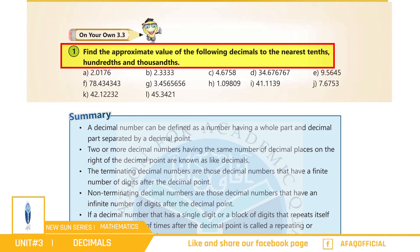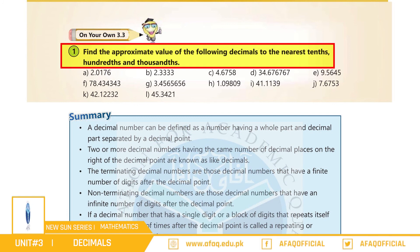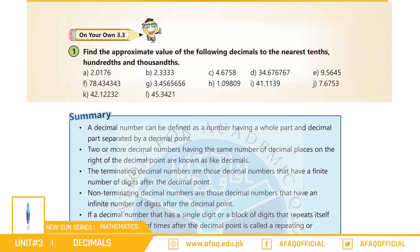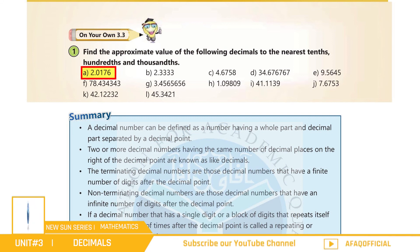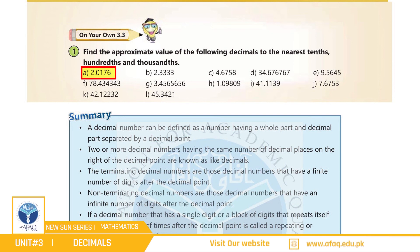اس concept کو سمجھنے کے لیے exercise سے سوال حل کرتے ہیں: Find the approximate value of the following decimals to the nearest tens, hundreds and thousands. (a) 2.0176 — دائیں والا نمبر six ہے جو کہ five سے بڑا ہے، ہم six کو ختم کر کے seven میں one add کر دیتے ہیں۔